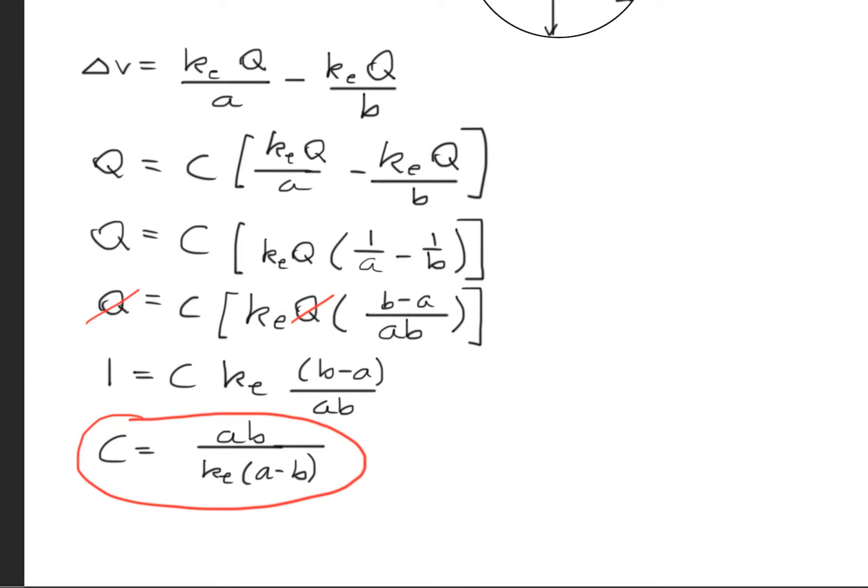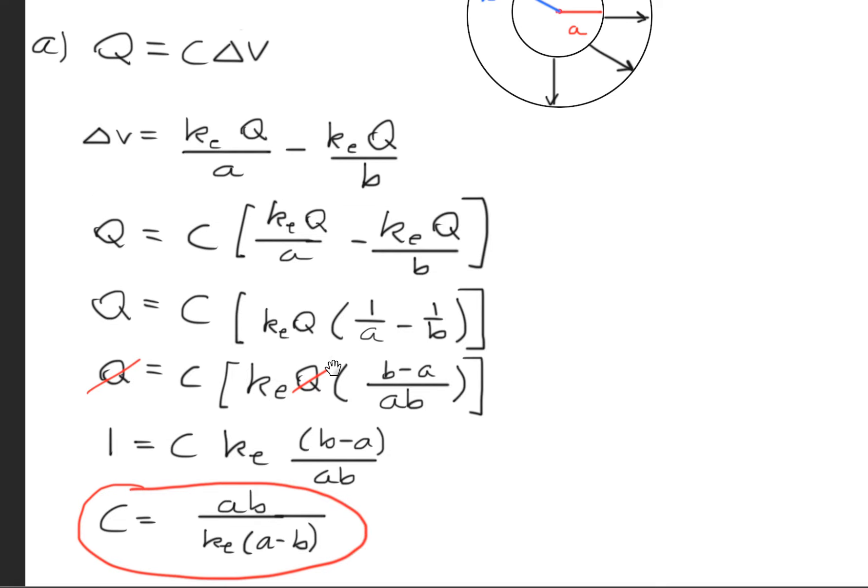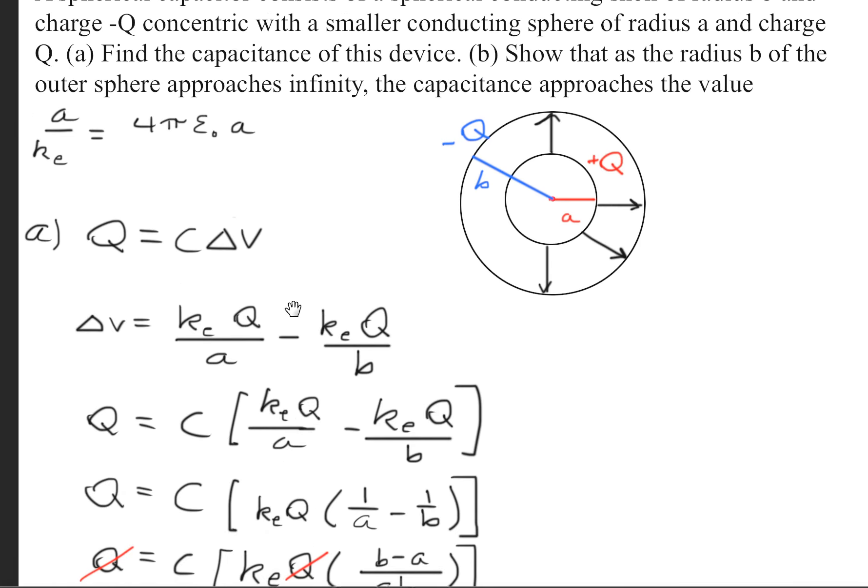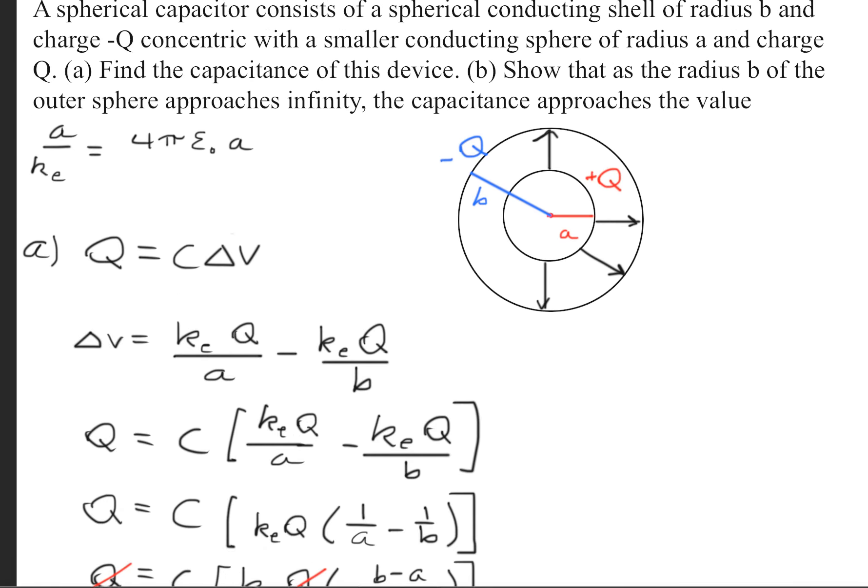After simplifying this expression, we get that the capacitance is equal to a·b divided by the Coulomb constant times (a-b). And that successfully answers part A of the question.